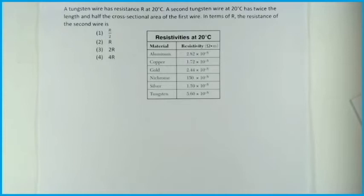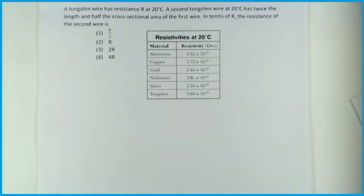Here's one for you to try. A tungsten wire has a resistance of R at 20°C. A second tungsten wire at 20°C has twice the length and half the cross-sectional area of the first wire. In terms of R, the resistance of the second wire is which of these four choices? Keep in mind you're doubling the length and halving the cross-section.